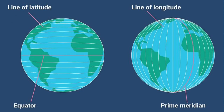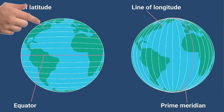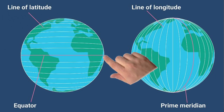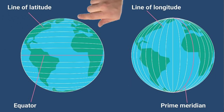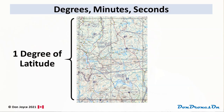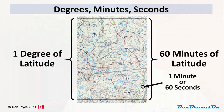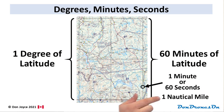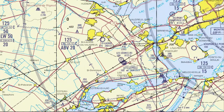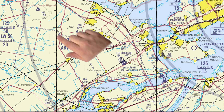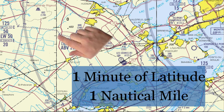First, a short refresher on latitude and longitude. Lines of latitude are parallel to the equator and evenly spaced all the way to the north and south poles. The equator is zero degrees latitude, the north pole is 90 degrees north, and the south pole is 90 degrees south. Each degree of latitude is divided into 60 minutes and each minute is further divided into 60 seconds. Here's a fun fact: they originally defined the nautical mile as one minute of latitude, which is useful because the minutes of latitude are usually visible on these maps — one tick mark on the VFR chart is one minute, and so one nautical mile.